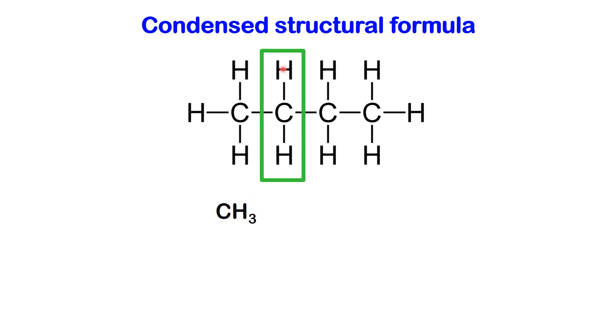Moving down the chain, let's examine the next atoms. There's a carbon with two hydrogens attached, represented as CH2. Further down, another carbon is attached to two hydrogens, depicted as CH2, followed by a carbon linked to three hydrogens, represented as CH3.